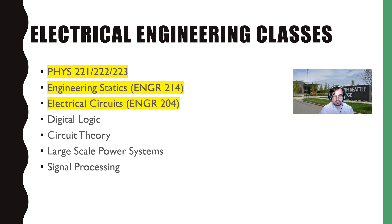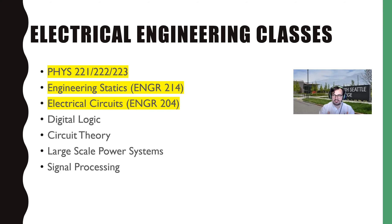Let's talk about some classes that electrical engineers take. The Physics series — 221, 222, and 223 — are really big. For a lot of engineers, they take engineering statics. Electrical engineering has a lot of AC applications. If you get really good at the Engineering 214 skills around geometry and working with vectors, it transfers really well into the circuits class. If you have an idea of how statics works, it makes you a better electrical engineer when working with mechanical engineers.